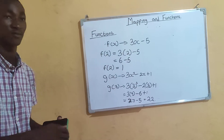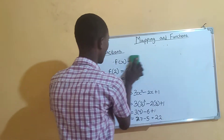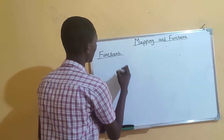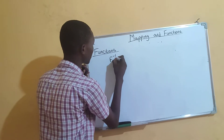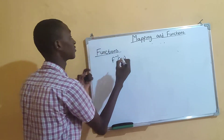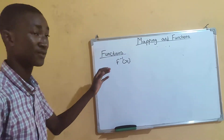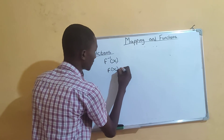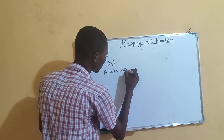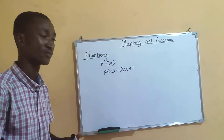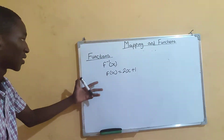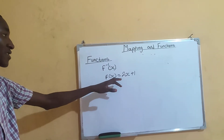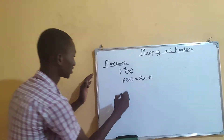Now let's take the inverse of a function. The inverse is written as f⁻¹(x). To find the inverse, you are given a function — for example, f(x) = 2x + 1. The first step is to equate this function to y, so y = 2x + 1.